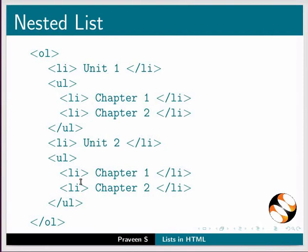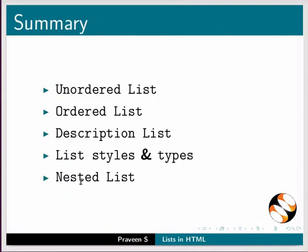This brings us to the end of this tutorial. Let us summarize. In this tutorial, we have learnt about unordered list, ordered list, description list, list styles and types, and nested list in HTML.